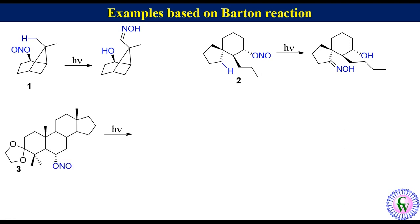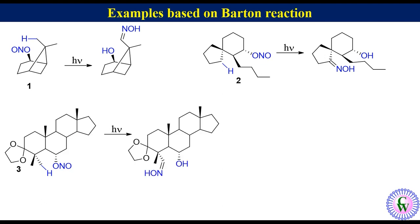Example 3. There are five delta carbons with hydrogen. But this delta hydrogen is closest in space to the nitrite. So this will be abstracted to produce this oxime.